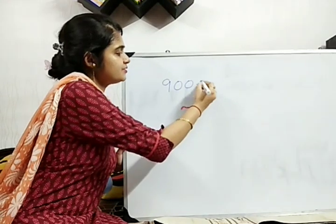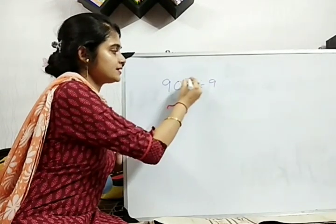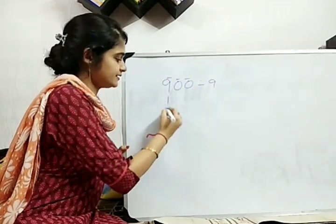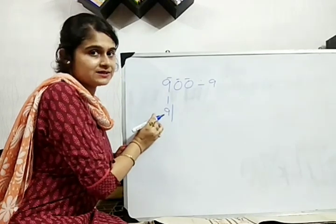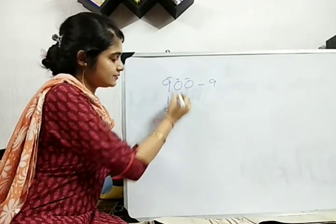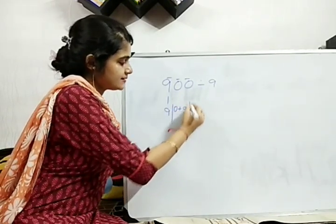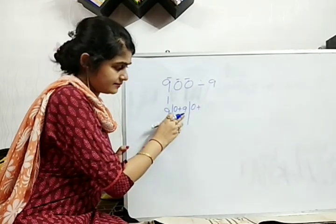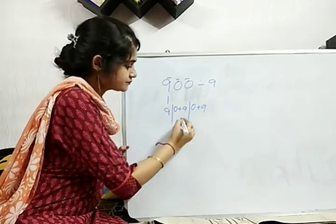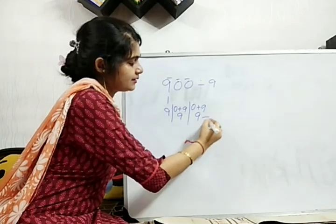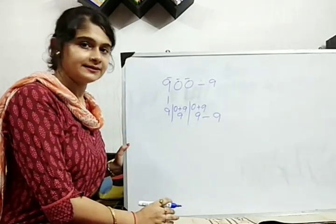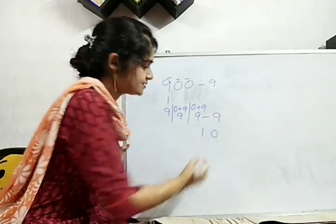900 divided by 9. So, again, single, single number we will take. This will count down. 2 lines we have taken. Upper line, lower line. Now, 0 plus 9. Then, next one, 0 plus. Again, 9 only. Both gives me 9. Now, divided by 9. Done. 1.0.